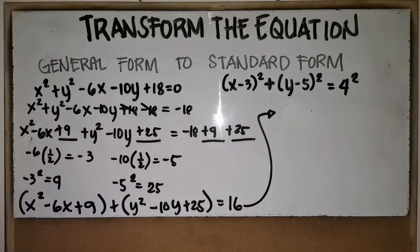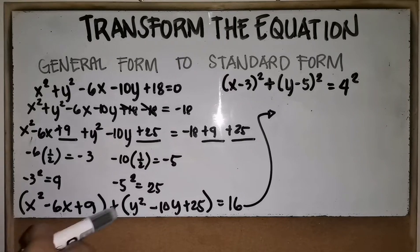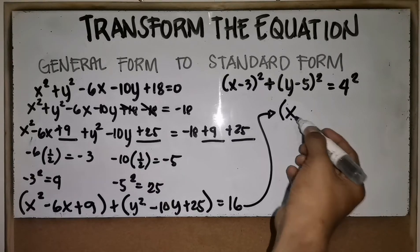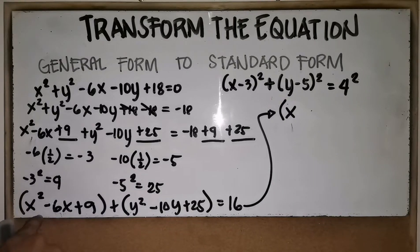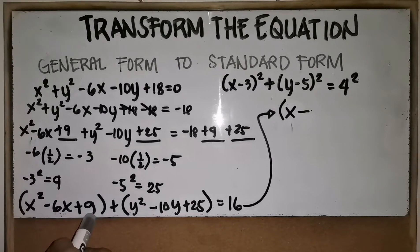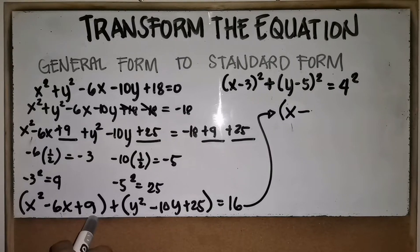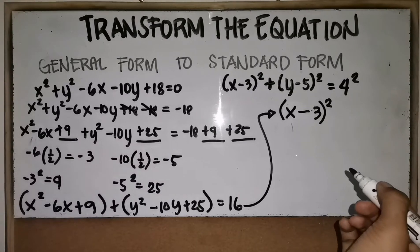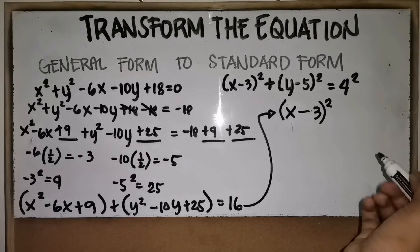Next, let's factor the perfect square trinomials. The factor of x squared is x. Copy the middle sign, which is minus. The factors of 9 are 3 and 3, and 3 plus 3 equals 6, matching the middle coefficient. So we write (x minus 3) squared.